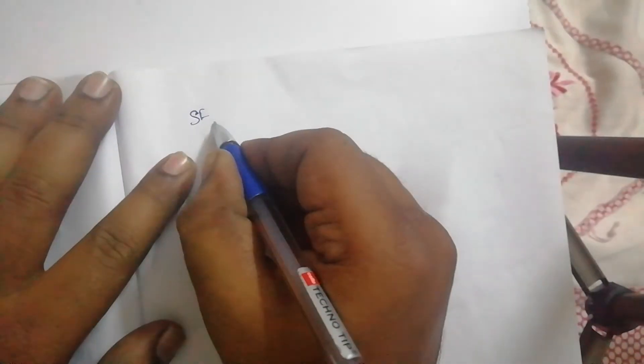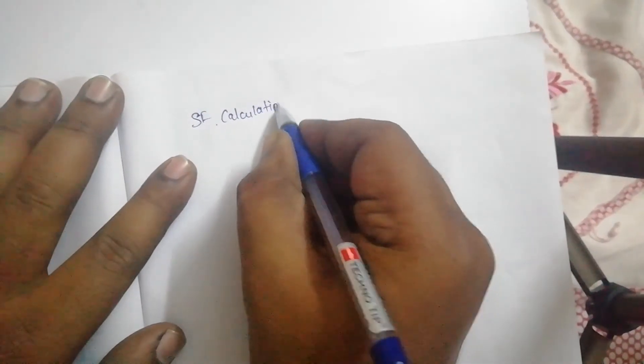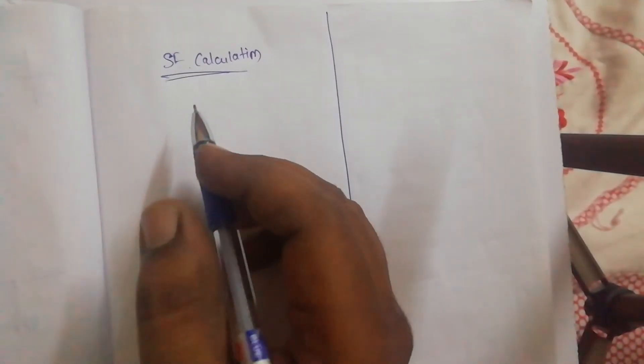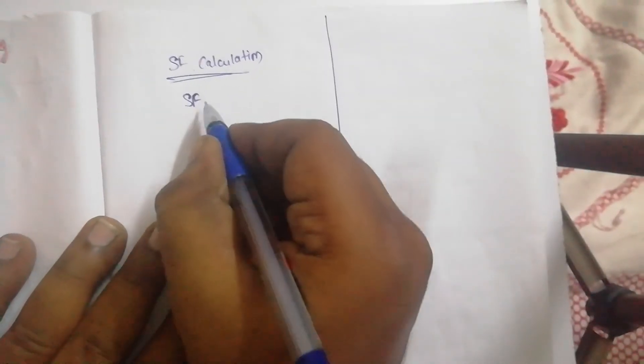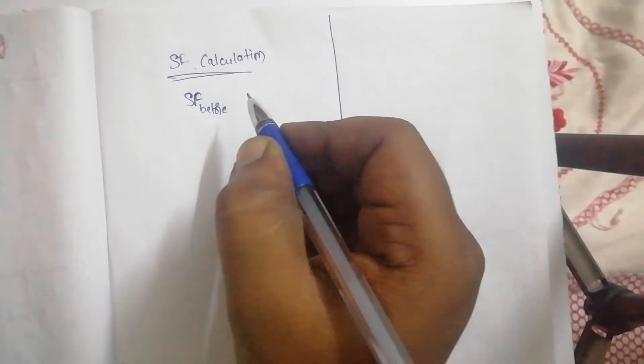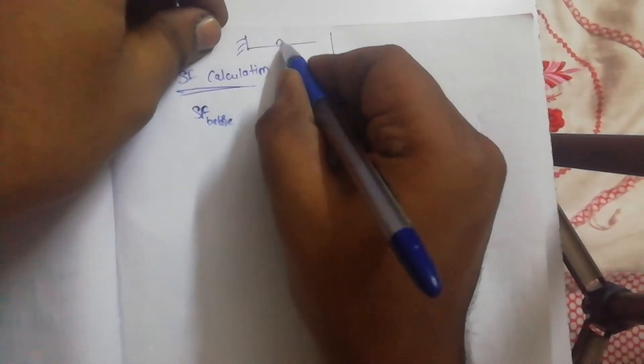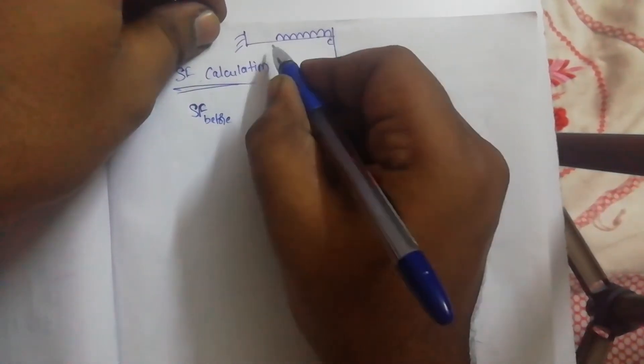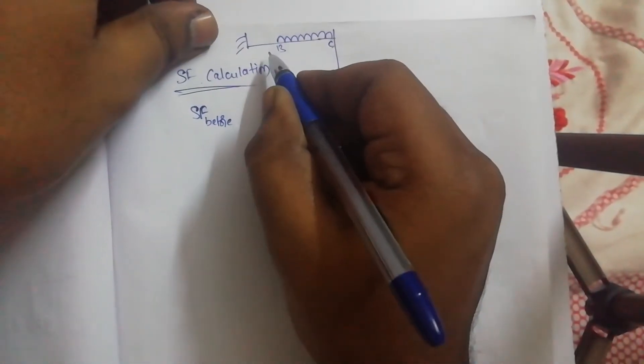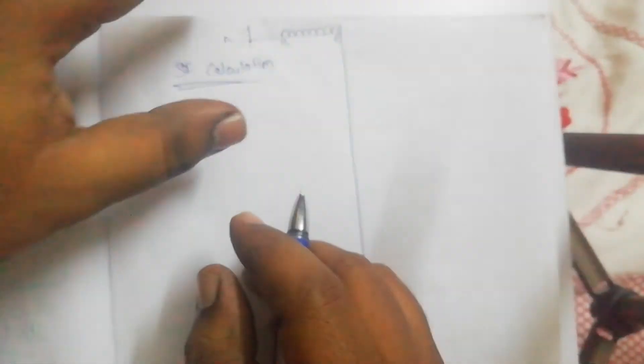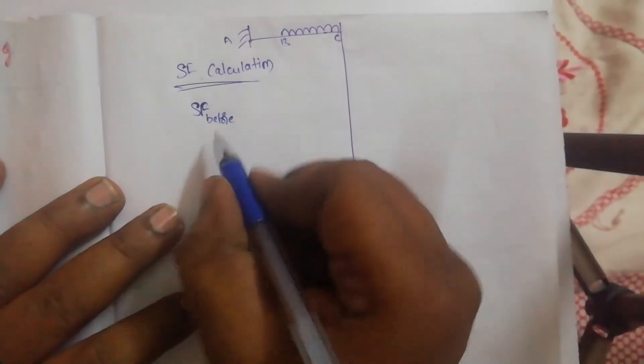Now let us do the shear force calculation. Generally, one side is used for bending moment and one side for shear force. For drawing the shear force diagram, keep the beam diagram on the left side and solve accordingly. I will redraw the diagram at the top corner: a cantilever with UDL, having points C at the free end, B at the end of the UDL, and A at the fixed end. The rightmost point is C.